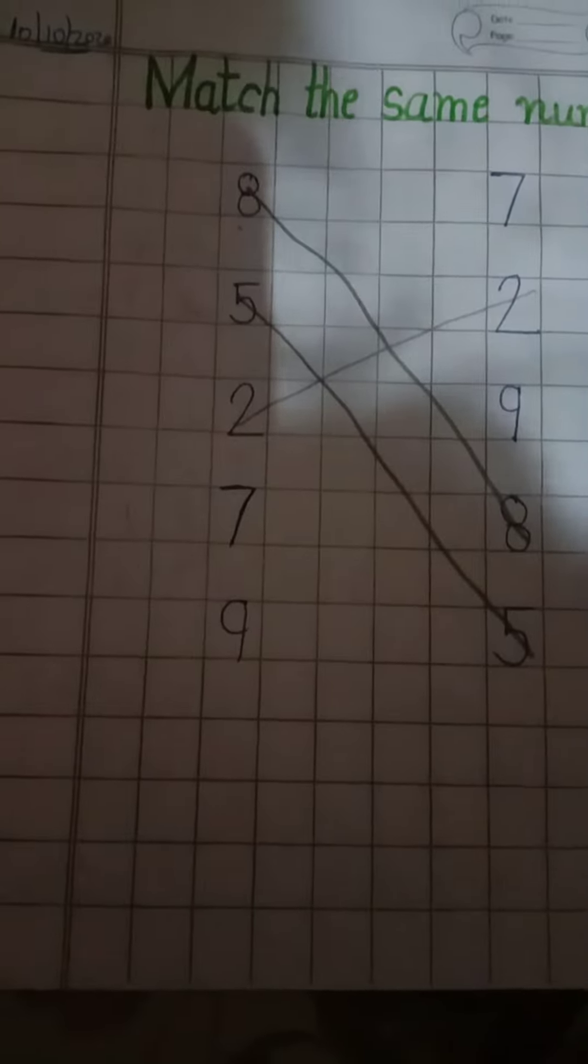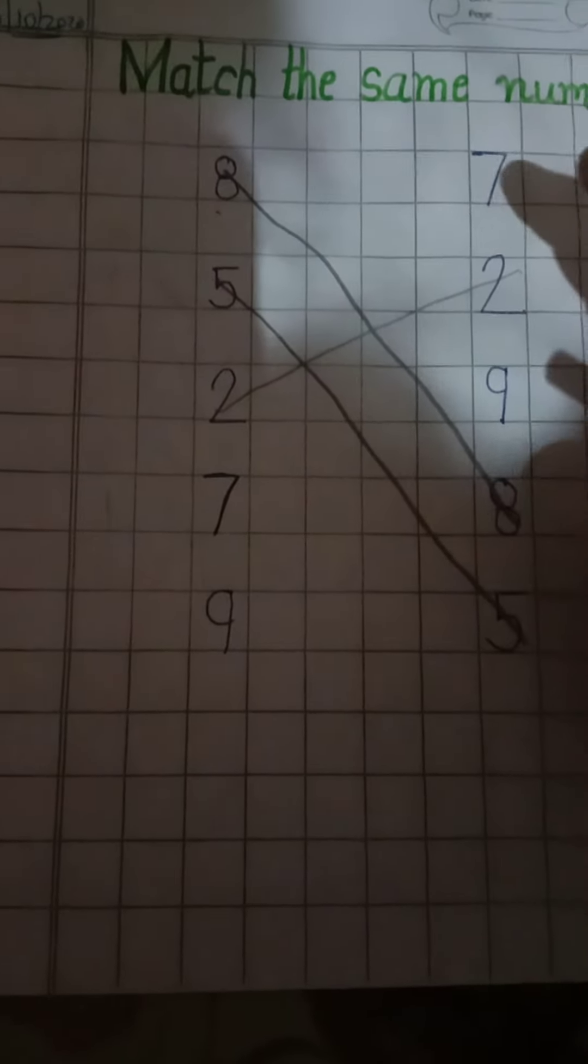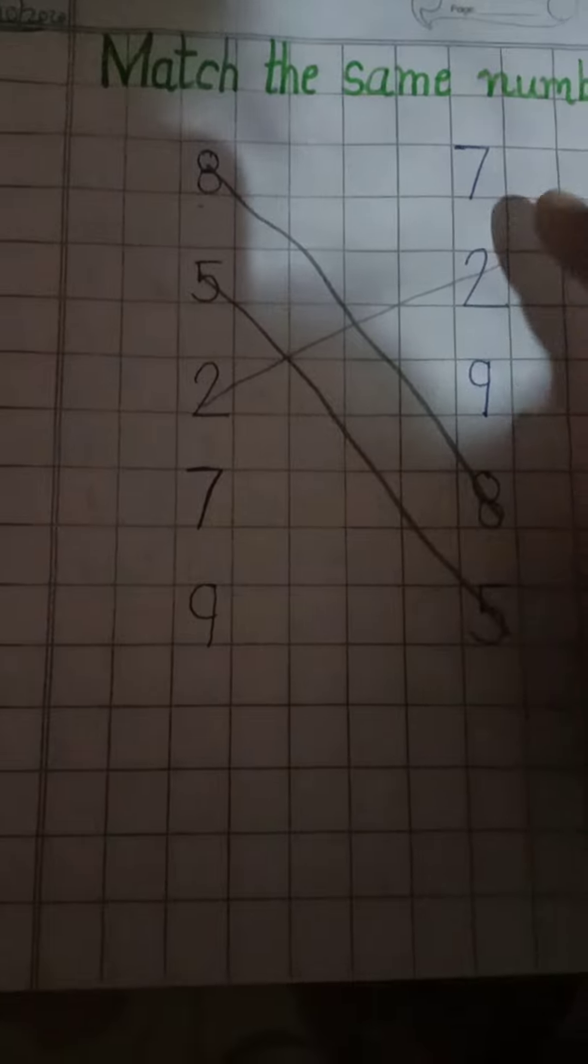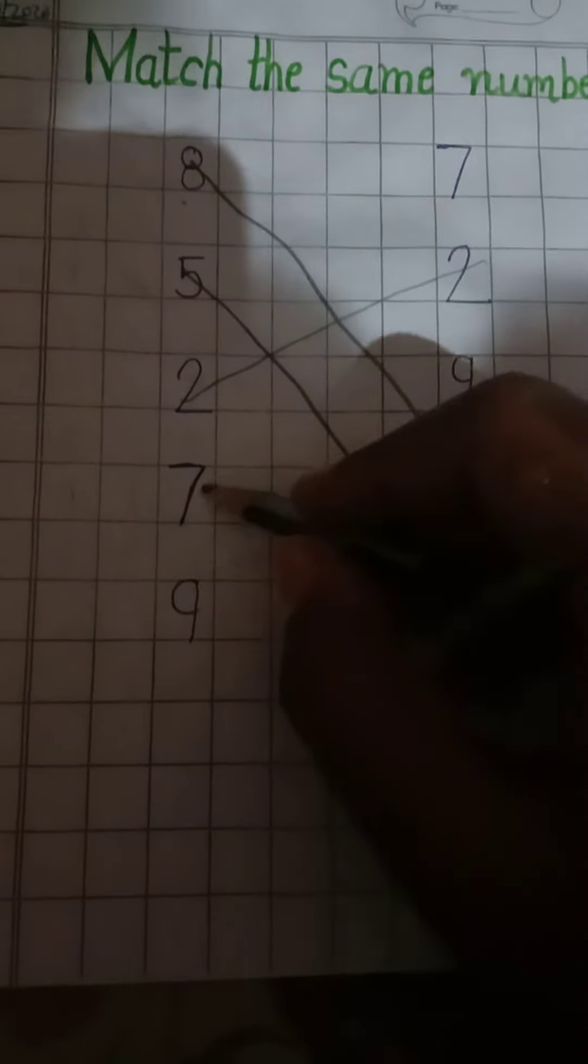Now, one sleeping line and one slanting line. Which number is this? It's a number 7. Where is the number 7? Look. Yes, it's number 7. So, match the number 7 with 7 like this.